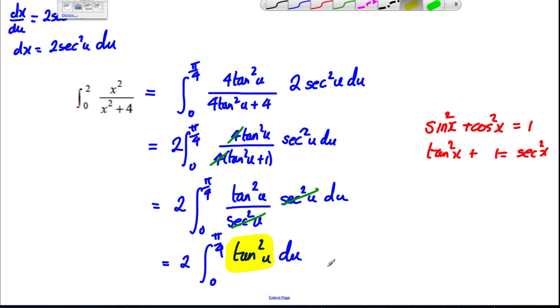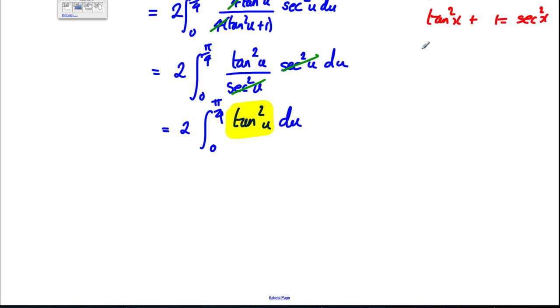Because tan²(x) is sec²(x) minus one using what we've written here, tan²(x) must be sec²(x) subtract one. So, keep the two there and the integral between zero and π by four sec²(x) subtract one with respect to x.